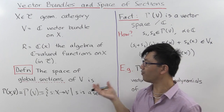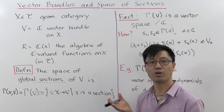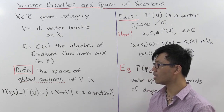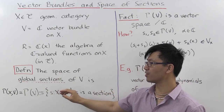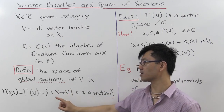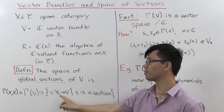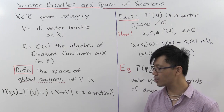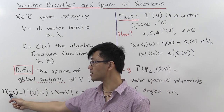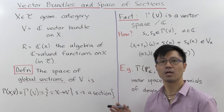We've defined sections of a vector bundle, and what we saw was that these sections are generalizations of the notion of functions. Now what we want to do is look at the totality — the set of all these sections. The space of global sections of V is just the set of all sections of V: all S which are functions X to V satisfying the usual condition that when you project back, you get the identity. We denote this with the gamma symbol — gamma for global — either gamma of V, or if you want to emphasize the base space X, we write gamma(X, V).